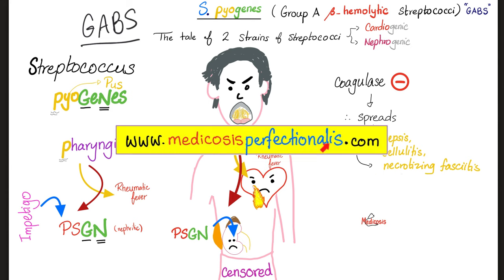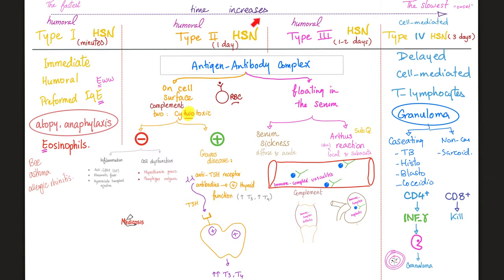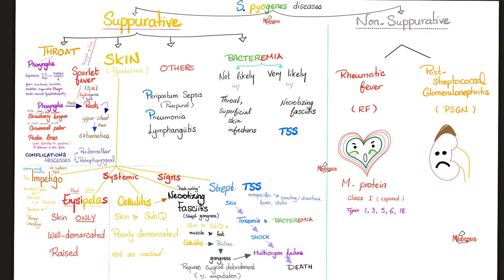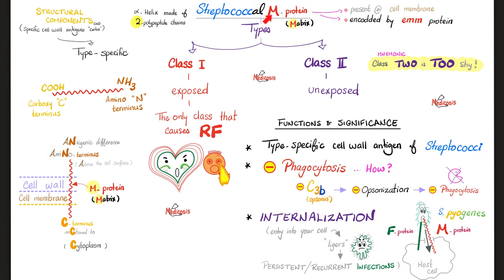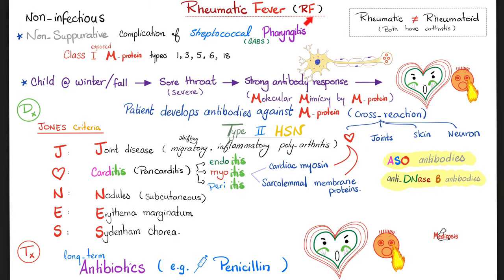You can download my handwritten notes at medicosisperfectionale.com. Remember, type 2 hypersensitivity reaction is cytotoxic. What cytotoxic? Cells of my heart, cells of my nerves, cells of my joints, cells of my skin, etc. Rheumatic fever is one of the non-suppurative diseases caused by Streptococcus pyogenes. Post-streptococcal glomerulonephritis is a second one. The culprit toxin of Streptococcus pyogenes is the M protein — M stands for matrix. Is it class 1 or class 2 M protein? It is class 1 — it's the exposed one. Contrast that with class 2 M protein, which is unexposed. The major Jones criteria: J — joint disease; O — carditis; N — painless nodules under the skin; E — erythema marginatum; S — Sydenham's chorea.